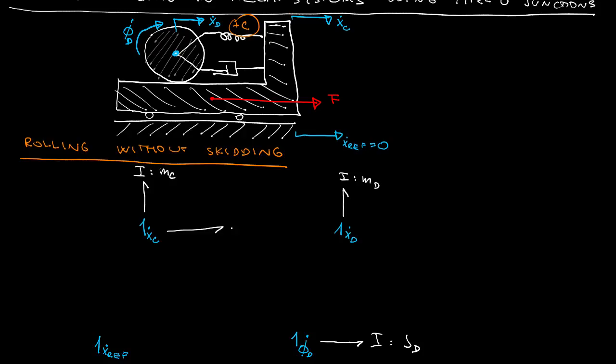And then I will use type 0 junction in order to access the relative velocities using the trick from the previous videos. I can immediately include the model of the spring and the resistor. And I can also include the external force in the model.